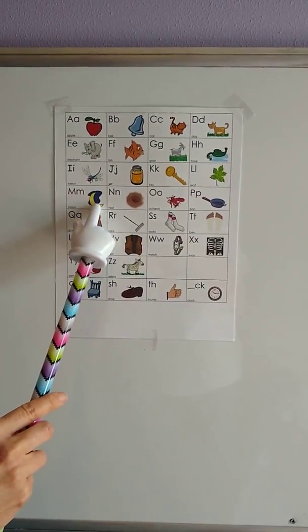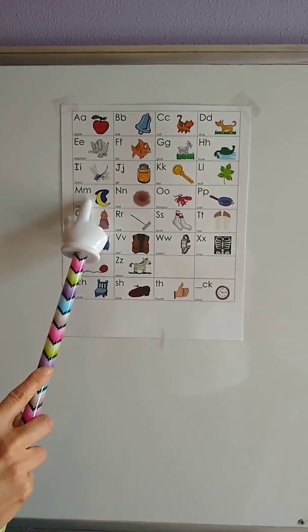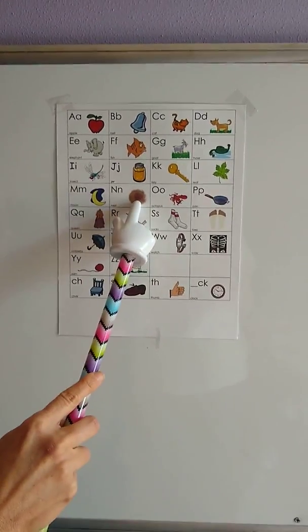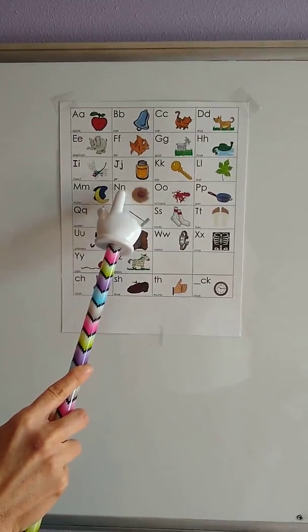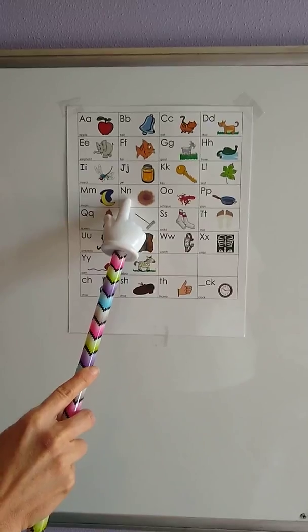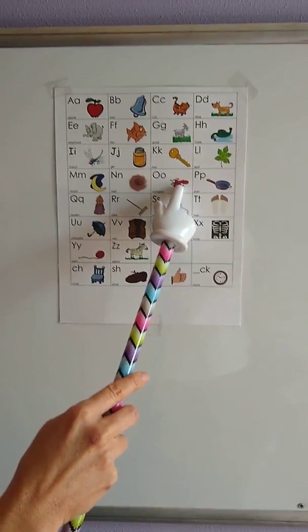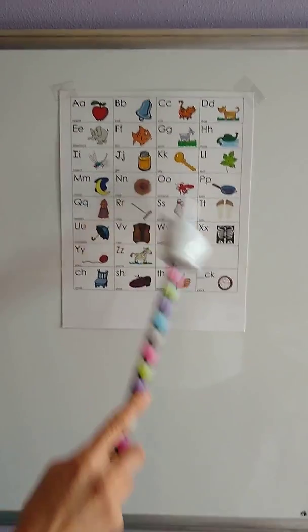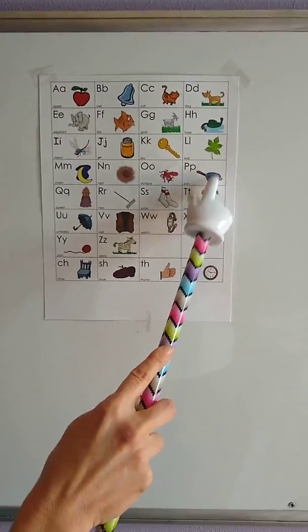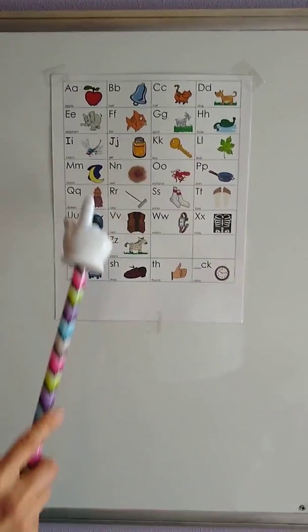Moon, moon, m, m, m. Nest, nest, n, n, n. Octopus, octopus, ah, ah, ah. Pan, pan, p, p, p.